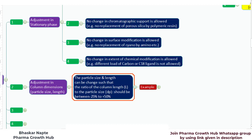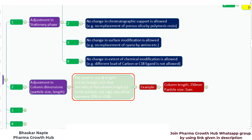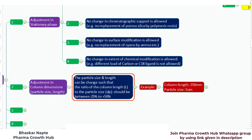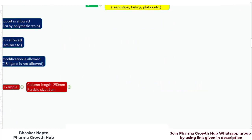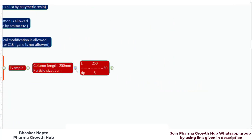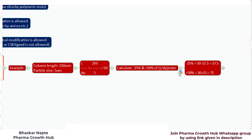Let us understand this with a simple example. Assume that the column length as per the monograph is 250 mm and the particle size is 5 micrometer. First, calculate the ratio of length to particle size — L by DP. L is 250, DP is 5, so the ratio becomes 50. Next, calculate the minus 25% and plus 50% of the L/DP ratio to get the entire allowed range.